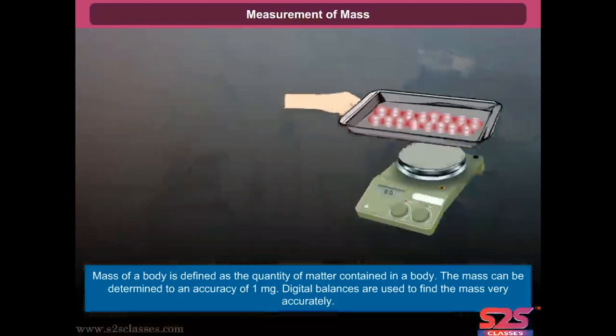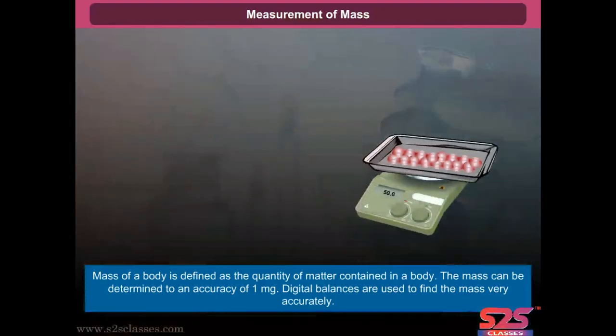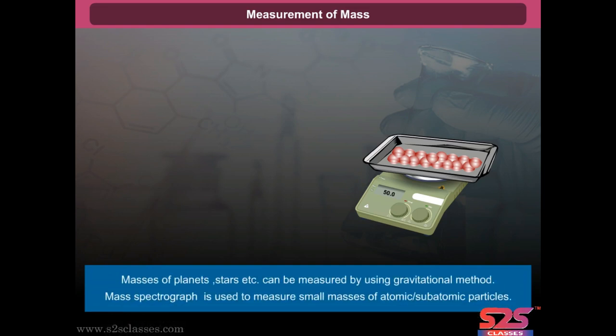Mass of a body is defined as the quantity of matter contained in a body. The mass can be determined to an accuracy of 1 milligram. Digital balances are used to find mass very accurately. Masses of planets, stars, etc., can be measured using the gravitational method. A mass spectrograph is used to measure small masses of atomic or subatomic particles.